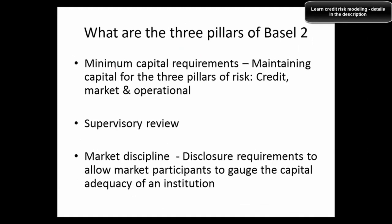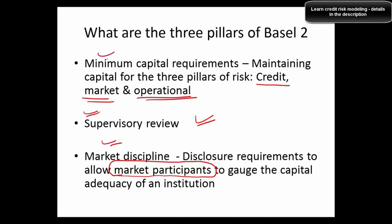What are the three pillars of Basel 2? The first is minimum capital requirements, wherein banks have to maintain capital for three types of risk: credit risk, market risk, and operational risk. The second pillar is supervisory review. The third is market discipline, wherein banks have to disclose requirements to allow market participants — such as investors — to judge the capital adequacy of an institution.